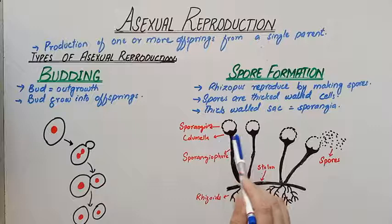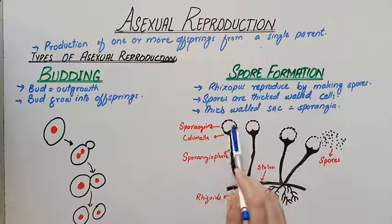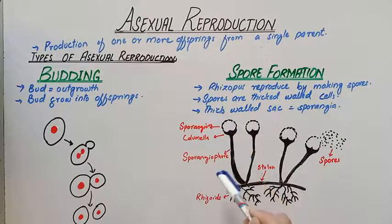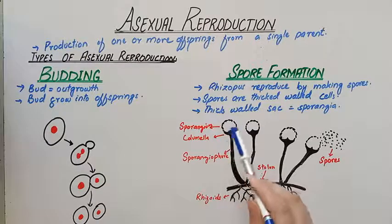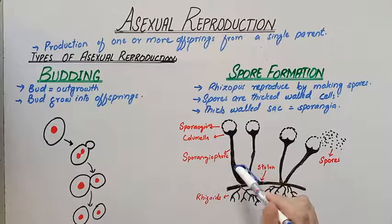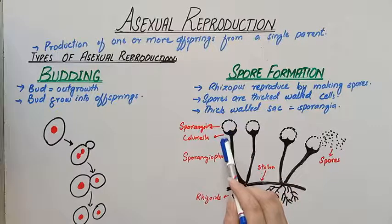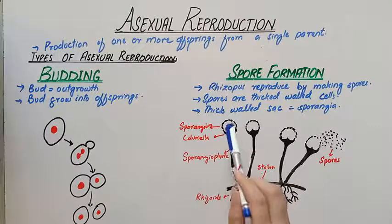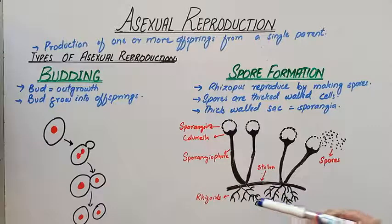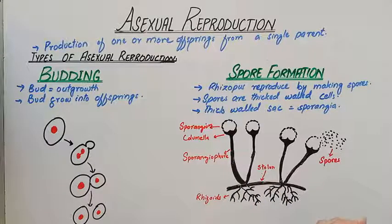The part attached to the sporangiophore is known as the columella. The sporangium is attached to this columella. The function of the sporangia is to produce and bear the spores.